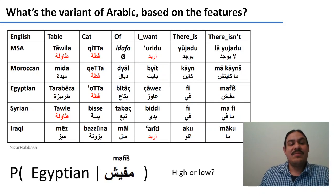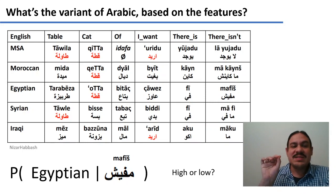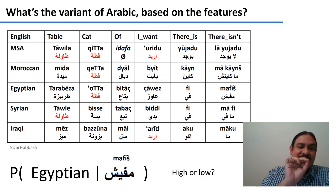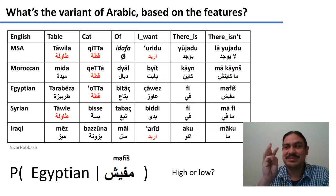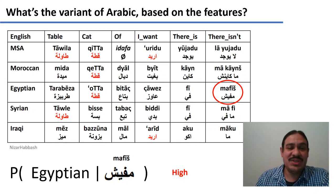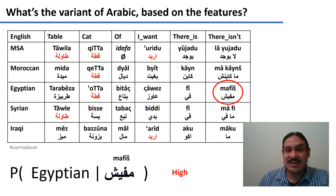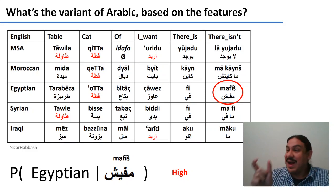For example, if we find this series of glyphs, which is pronounced Mafish, what is the probability that the document is going to be in Egyptian Arabic? As you can see, if a document has the word Mafish in it, it is very likely to be written in Egyptian Arabic. Why? Because the other dialects have different words for there isn't. For example, in Moroccan it will be Ma Kainsh, in Syrian it will be Mafi, and in Modern Standard Arabic it will be La Yujadu. So Mafish is highly associated with the document being in Egyptian.